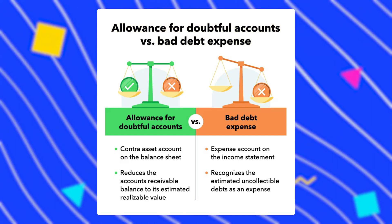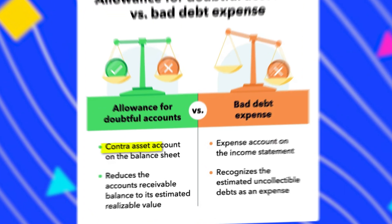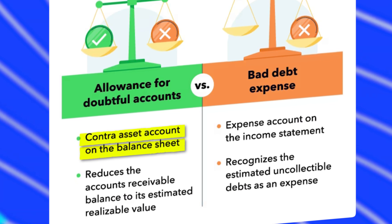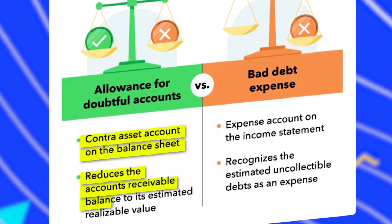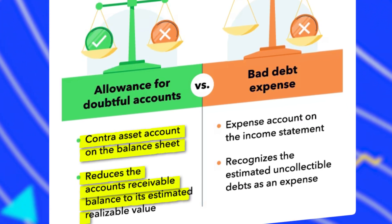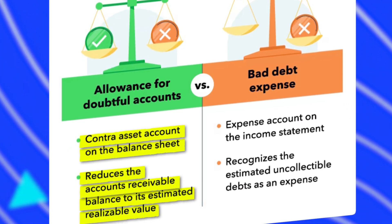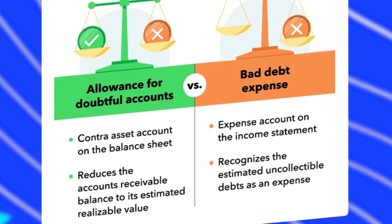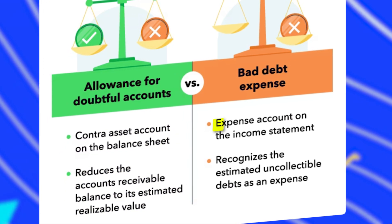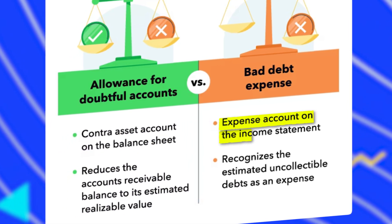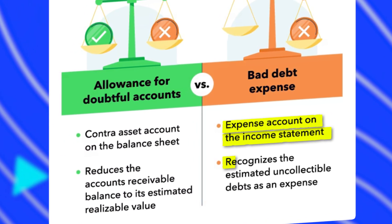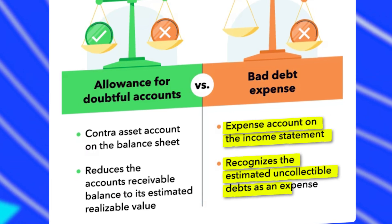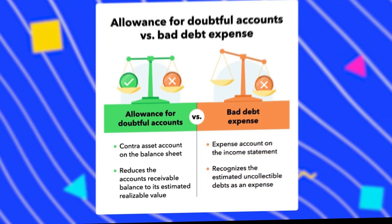The allowance for doubtful accounts is a contra asset account on the balance sheet and it reduces the accounts receivable balance to its estimated realizable value. Bad debt expense is an expense account on the income statement and it recognizes the estimated uncollectible debt as an expense.